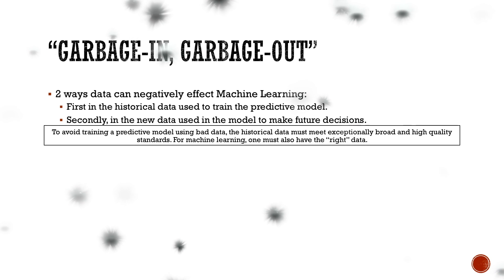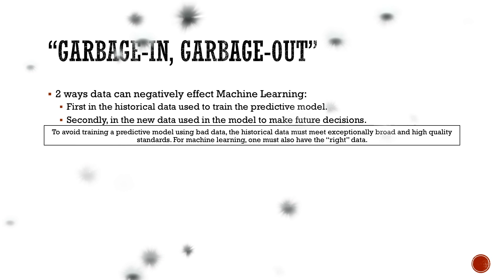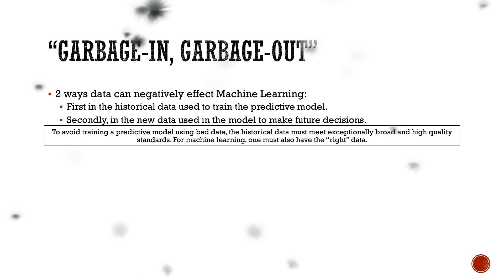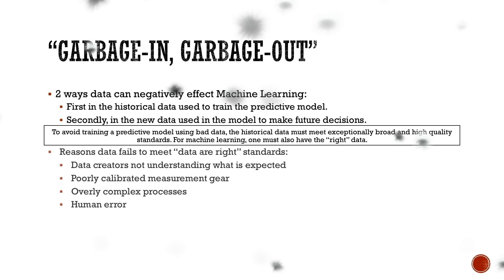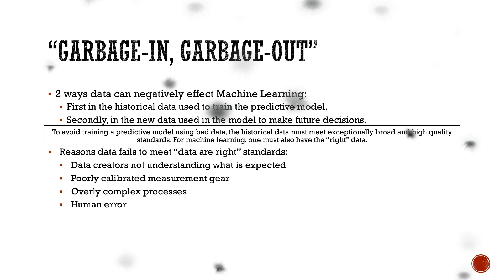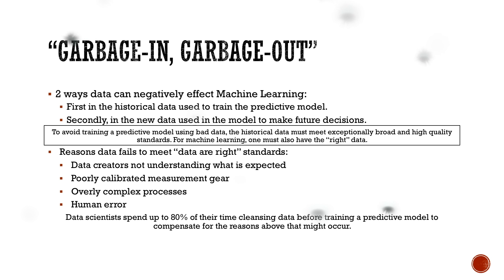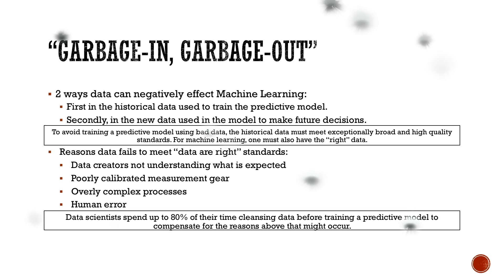One must also have the right unbiased data. Data should be correct, properly labeled, deduped, and unbiased. Unlike most data quality work, which focuses on one criteria or another, with machine learning you have to work on multiple criteria simultaneously. Most data today fails to meet data quality standards. Some examples of why this happens include data creators not understanding what is expected of them, poorly calibrated measurement gear, overly complex processes, and of course human error. Data scientists spend up to 80% of their time cleaning data before training a predictive model to compensate for these errors.